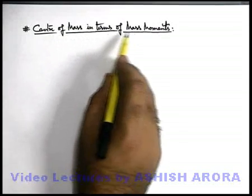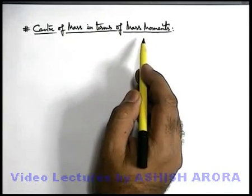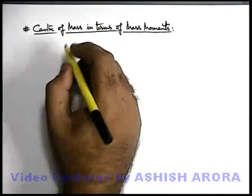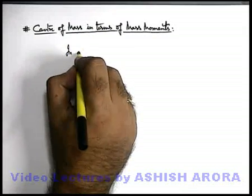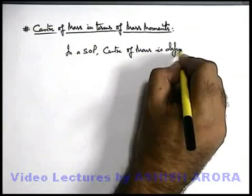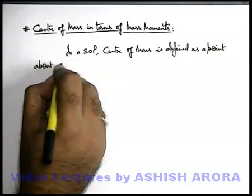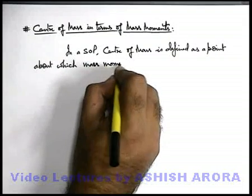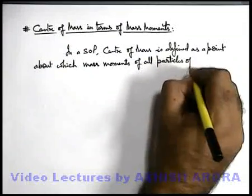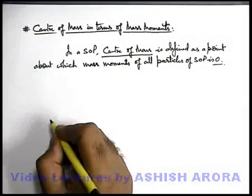Now we'll discuss centre of mass in terms of mass moments. As we already studied, mass moment is calculated with respect to a reference point for a mass, and it is a vector quantity. Centre of mass in a system of particles is defined as a point about which the mass moments of all particles of a system of particles is equal to zero. This is a general definition for localization of centre of mass for a system of particles.